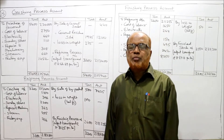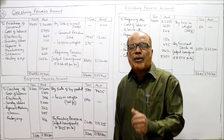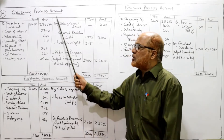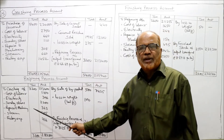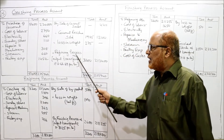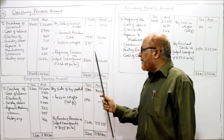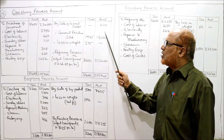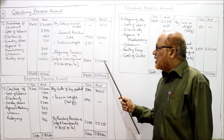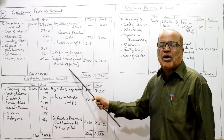The crude oil produced is 3200 tons — this is the output of the crushing process and it is transferred to the refining process. So by refining process account: output transferred 3200 tons. Take the total of the debit side — you get rupees 2,25,940. From 2,25,940 subtract 440 and subtract 12,100; the balancing figure is 2,13,400. This is the value of the output. 2,13,400 divided by 3200 gives a cost per ton of rupees 66.69.